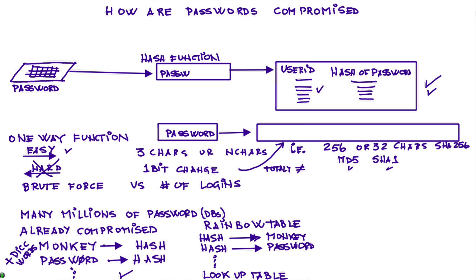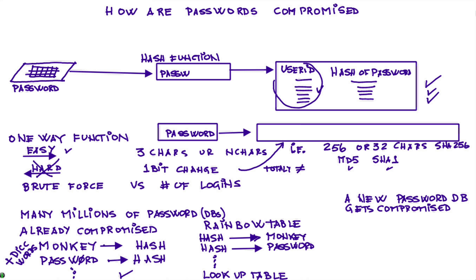This defeats the one-way property of the hash — not by reversing the hash itself, but through pre-computation. If you have 10 terabytes of hashes paired with their corresponding passwords, when a new password database is compromised, the bad guys quickly look up every hash in their rainbow table. They have the user IDs in clear text and the hashes, and with the rainbow table they can easily retrieve the password — unless your password is truly unique and complex. 'Monkey' is definitely not one of those.